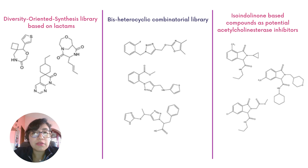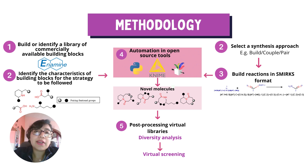For this tutorial, we discuss three examples of library design: a diversity-oriented synthesis library based on lactams, a bisheterocyclic combinatorial library, and a set of target-oriented molecules based on isoindolinones.